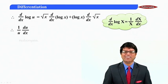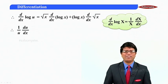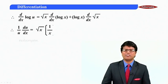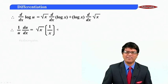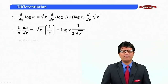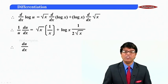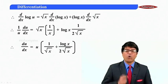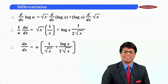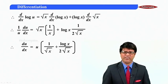What is replacing big x? It is u. Differentiate du by dx. Root x as it is, derivative of log x is one by x, plus log x as it is, and derivative of root x is one by two root x. So du by dx will be u bracket one by root x — because root x upon x is one upon root x — plus log x upon two root x.